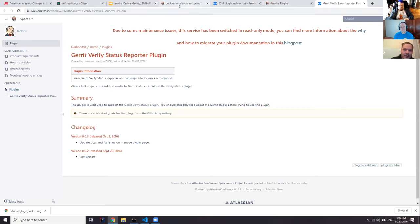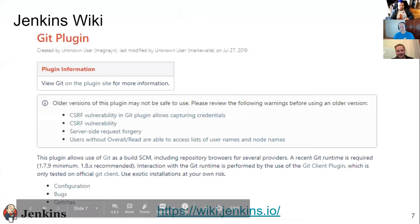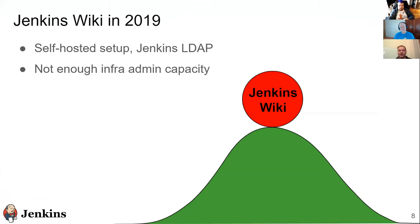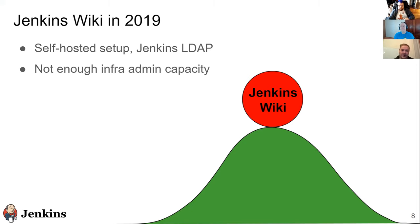Jenkins Wiki is basically based on Confluence, self-hosted by Jenkins — we run it as a service and maintain it in the Jenkins infrastructure team. Thanks to Olivia Vernin and other contributors who helped maintain it. Historically we've had a lot of issues with Jenkins Wiki. One is the lack of infra-admin capacity — we don't have so many contributors in the infrastructure team. This is something we're working on in the Documentation Special Interest Group as well.